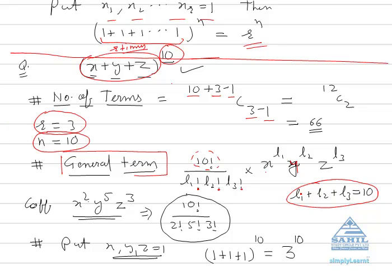Suppose you want to find the coefficient of x squared, y raised to power 5, and z raised to power 3. The value of l1 is 2, l2 is 5, and l3 is 3. So the coefficient of this particular term is 10 factorial upon 2 factorial times 5 factorial times 3 factorial. You can find the coefficient of any term in the multinomial expansion this way.